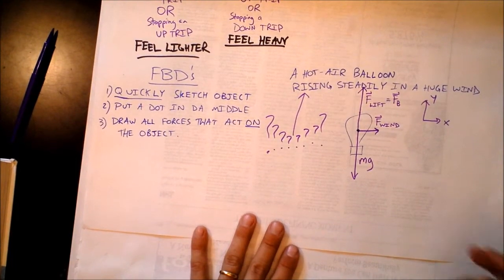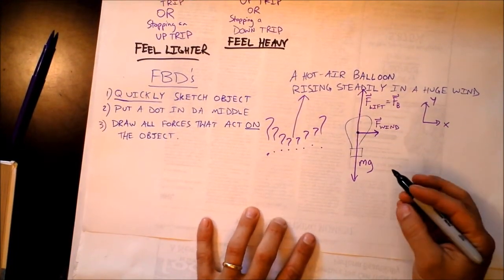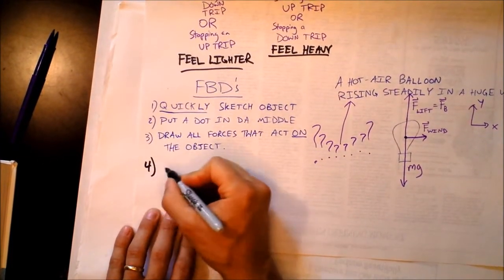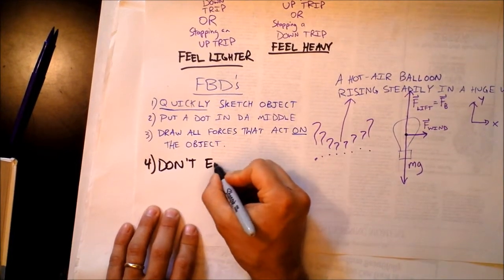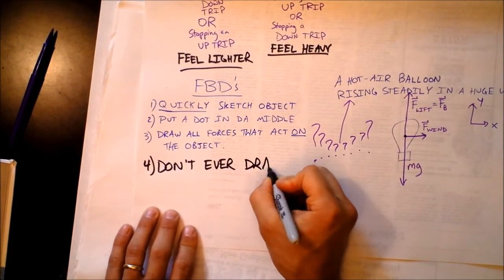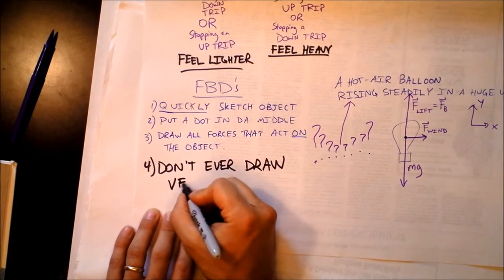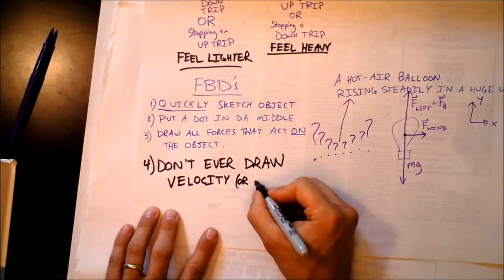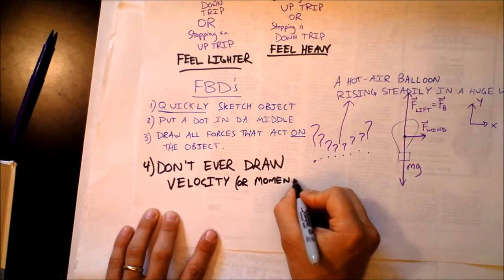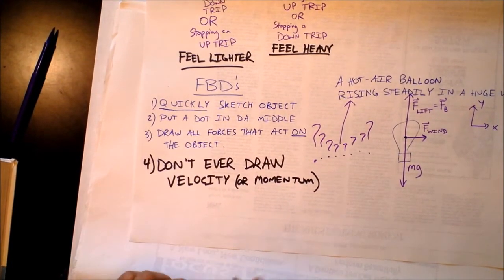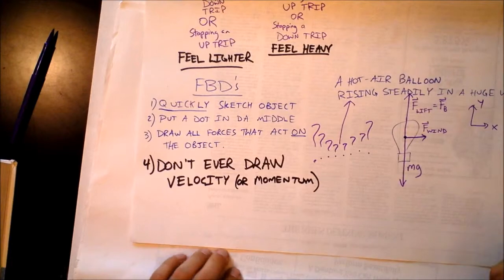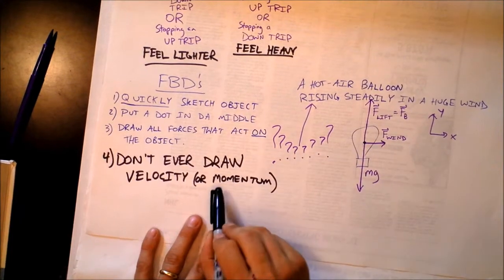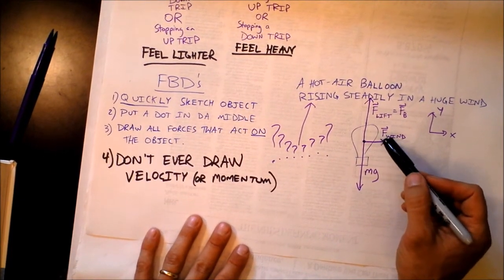We're never going to show momentum on a free body diagram. And we certainly don't show inertia on a free body diagram. So I'm just going to write this as one final rule for free body diagrams. Don't ever draw velocity or momentum. Velocity is completely irrelevant for the acceleration of the balloon. And that's what free body diagrams can tell us. Also momentum, completely irrelevant for the acceleration of the balloon.